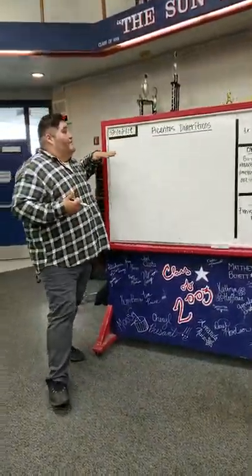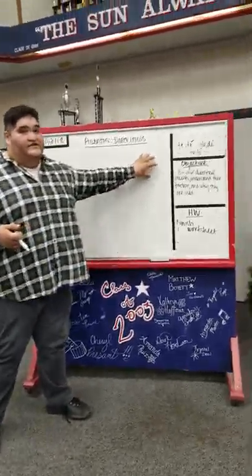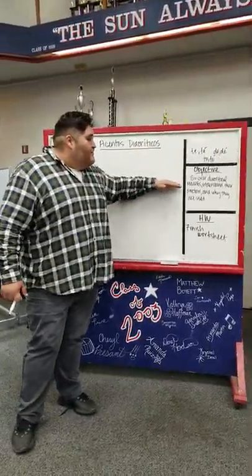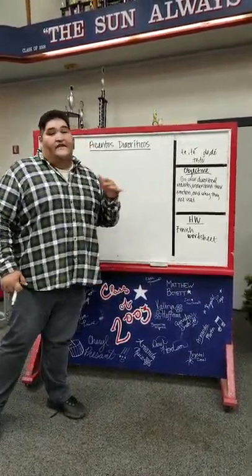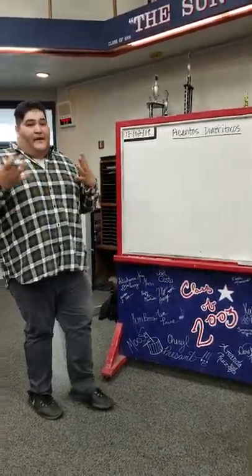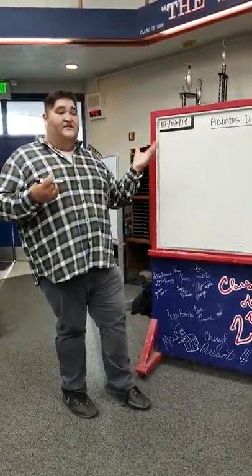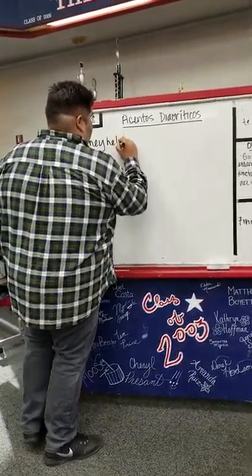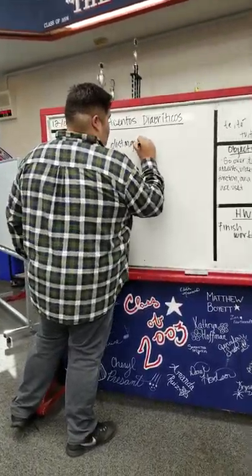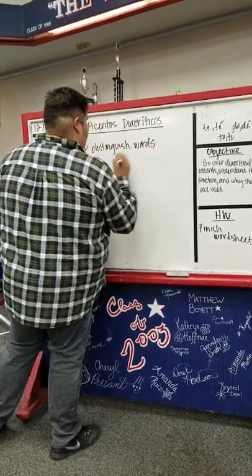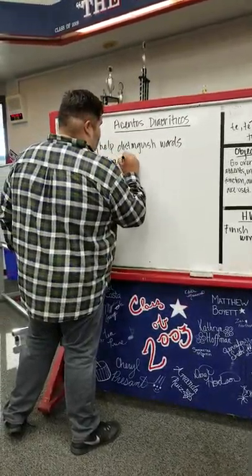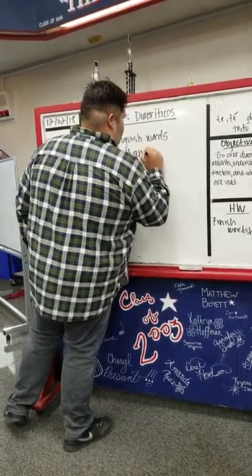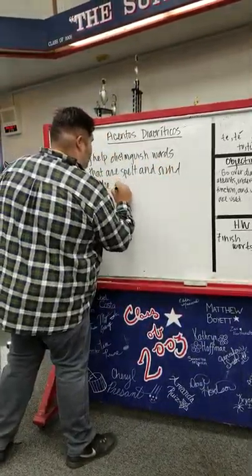So we have gone over what we did last class: the types of words and how to accentuate them. It's now important for you to know what acentos diacríticos are. The objective of this lesson is to go over diacritical accents, understand their function, and why they are used. Primarily, what acentos diacríticos do is help distinguish words that are spelled and sound the same.